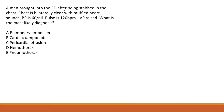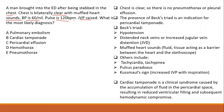A man was brought into the ED after being stabbed in the chest. The chest is bilaterally clear with muffled heart sounds. There is a triad called the Beck's triad, which comprises low BP, increased jugular vein pressure, and muffled heart sound — this is an indication for cardiac tamponade. Cardiac tamponade is a clinical syndrome caused by accumulation of fluid in the pericardial space, resulting in reduced ventricular filling and subsequent hemodynamic compromise.